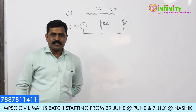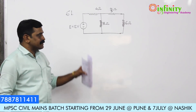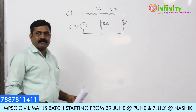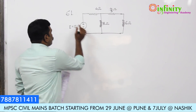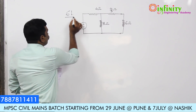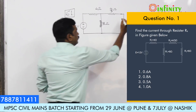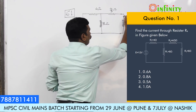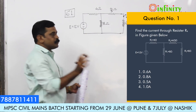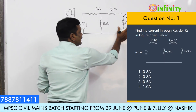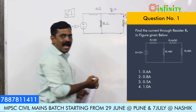Hello friends, I am Pramut Deshkari and we are going to discuss the analytical part of MPS equations. This is question number 61: What is the value of current flowing through the 6 ohm resistor, that is R4?